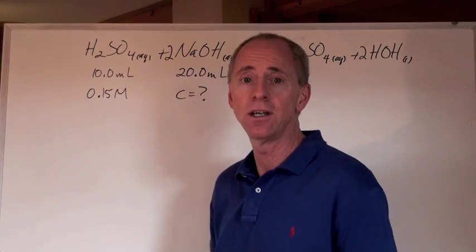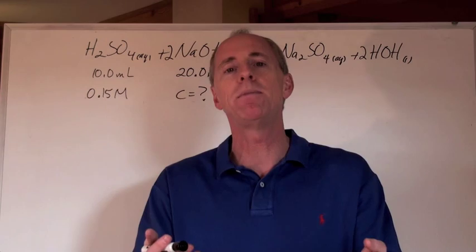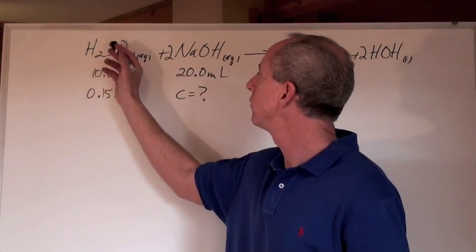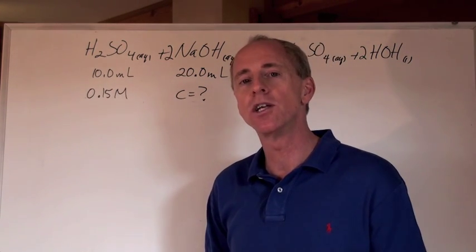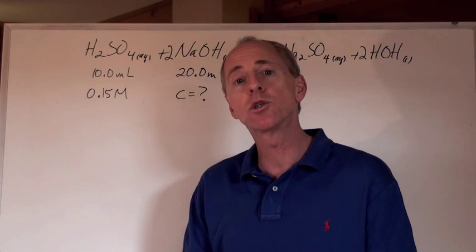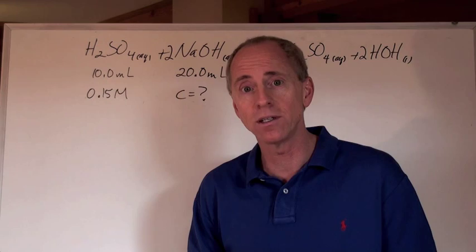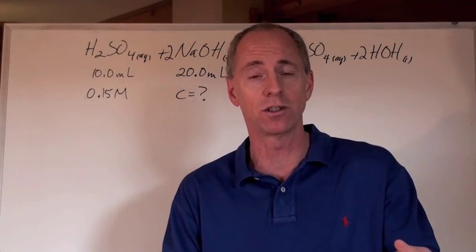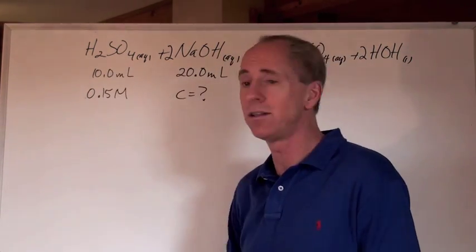We've got sulfuric acid and it's reacting with sodium hydroxide and here's the question as it may be worded on a test. So you've got 10 milliliters of sulfuric acid of a 0.15 mole per liter concentration and it is titrated by a solution of sodium hydroxide and equivalence point is reached or the end point is reached where the color changes in solution when 20 milliliters of the base is added to the acid.